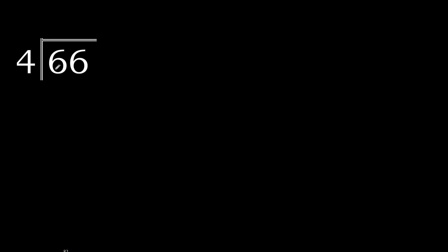6 divided by 4. 6 is not less, therefore with 6 and 4, multiply by which number is nearest to 6 but not greater. 4 multiplied by 2 is 8, which is greater. Therefore multiply by 1 is 4, which is not greater. 6 minus 4 is 2.